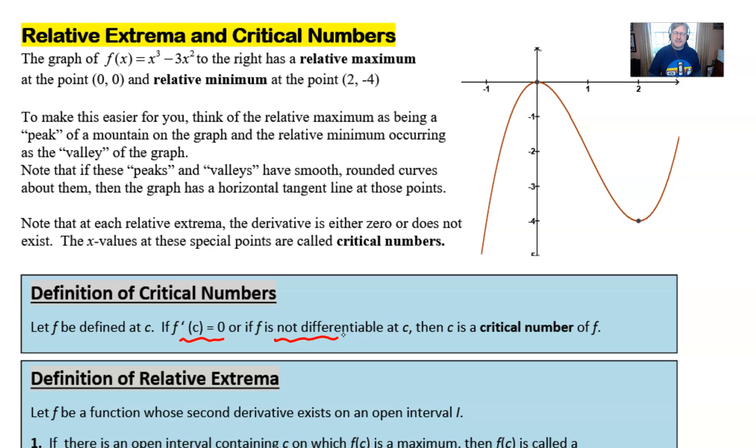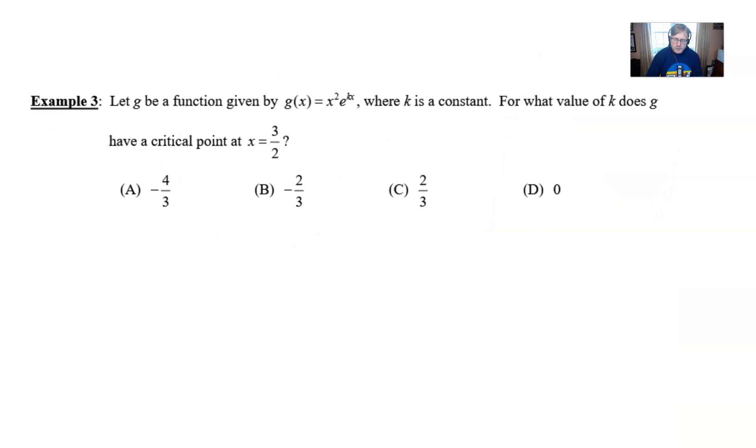Let's take a look at our example. So here we go with example three. It says to let g be a function given by g(x) equal x squared times e raised to the kx power where k is a constant. For what value of k does g have a critical point at x equal three halves?